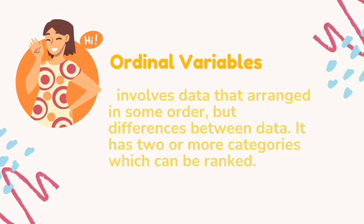For ordinal variables, this involves data that are arranged in some order, but differences between data values are not uniform. It has two or more categories which can be ranked. It is an extension of nominal data, has no standardized interval scale, establishes a relative rank, measures qualitative traits, and the median and mode can be analyzed. It has a rank or order. Examples include ranking contests: champion, first runner-up, second runner-up, and the Likert scale, which is used by researchers to prepare questionnaires and get people's opinions — such as strongly agree, agree, disagree, and strongly disagree.